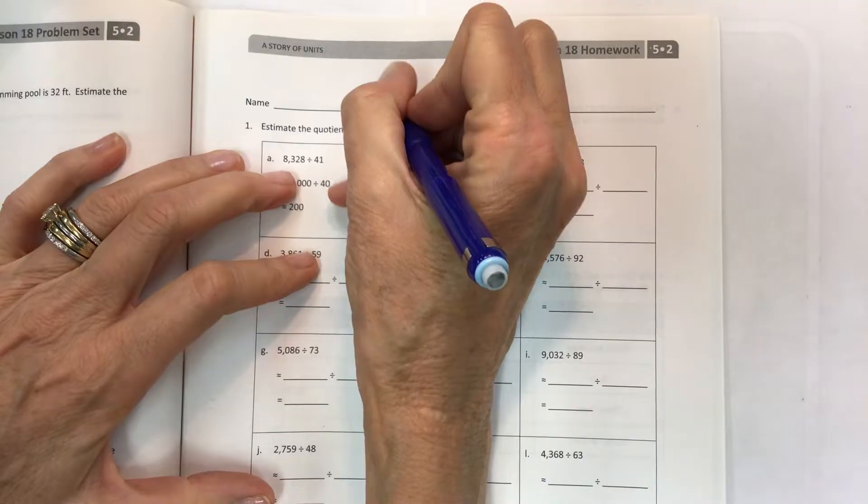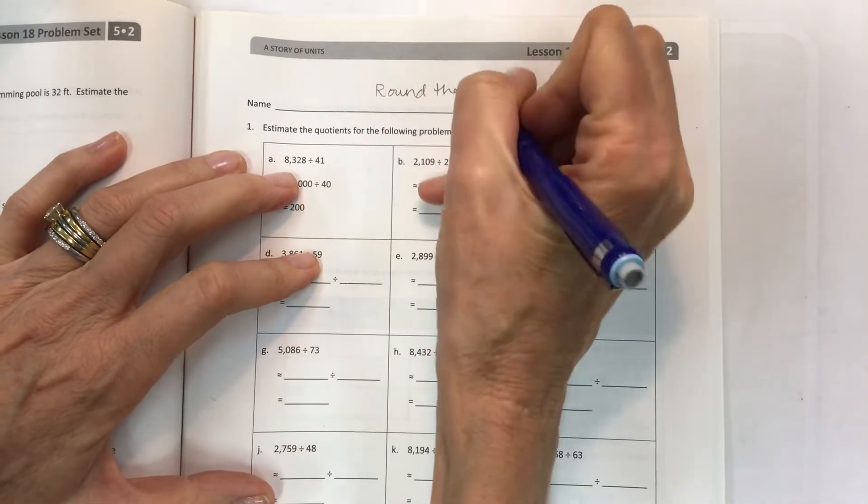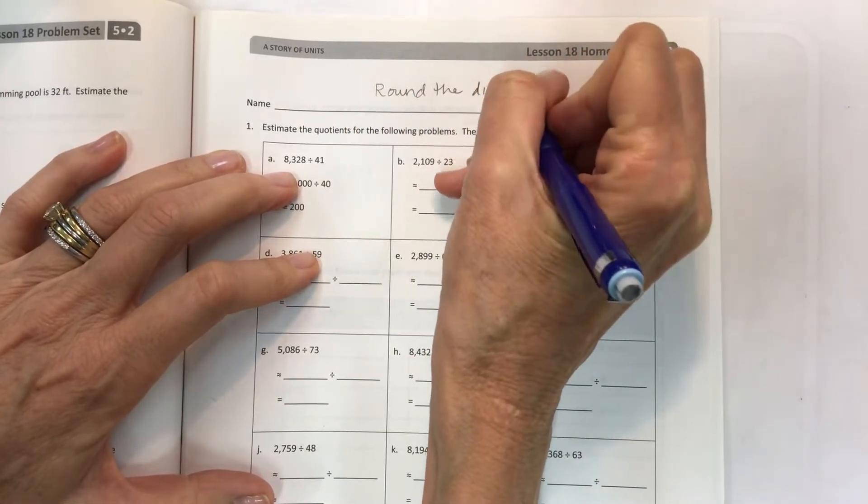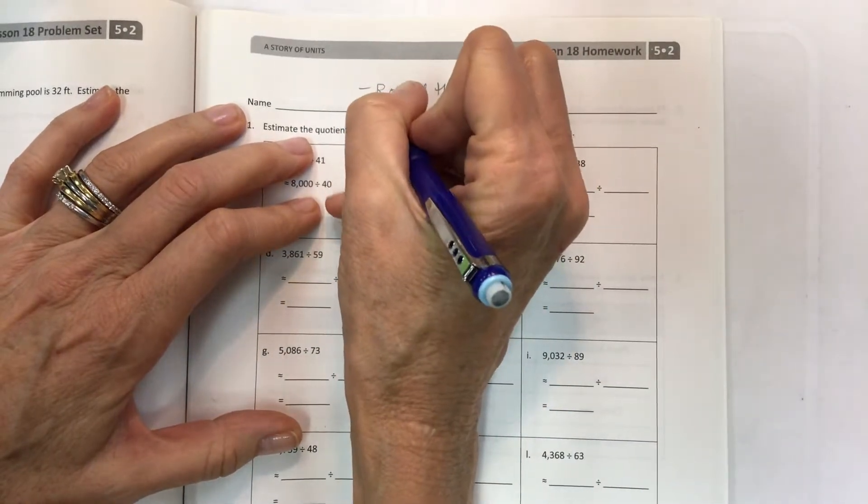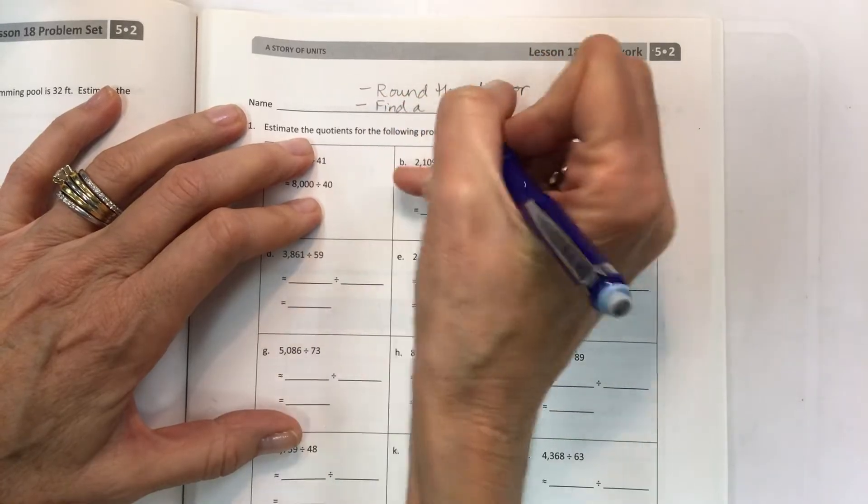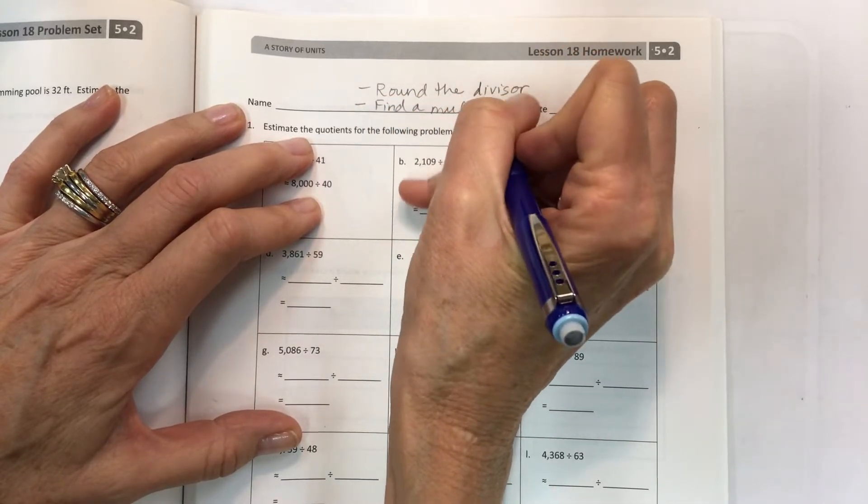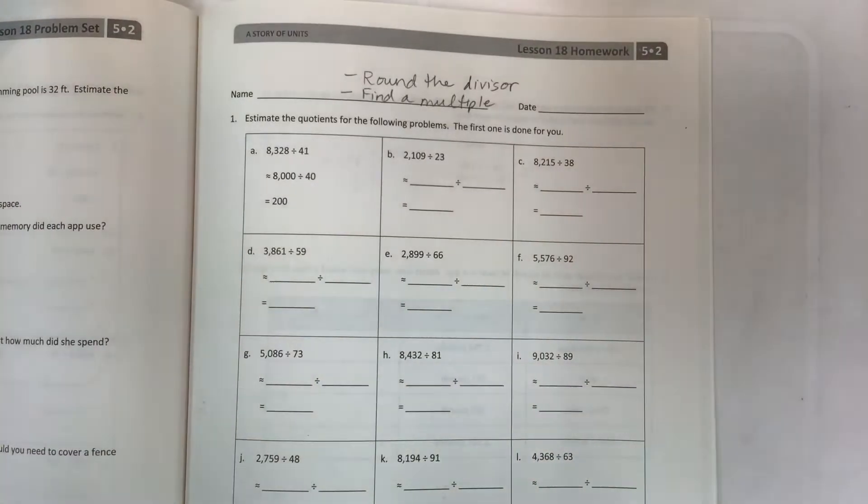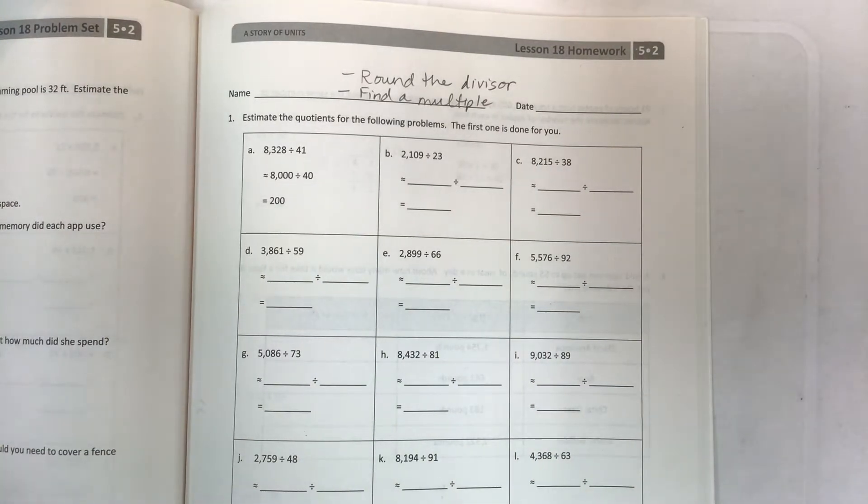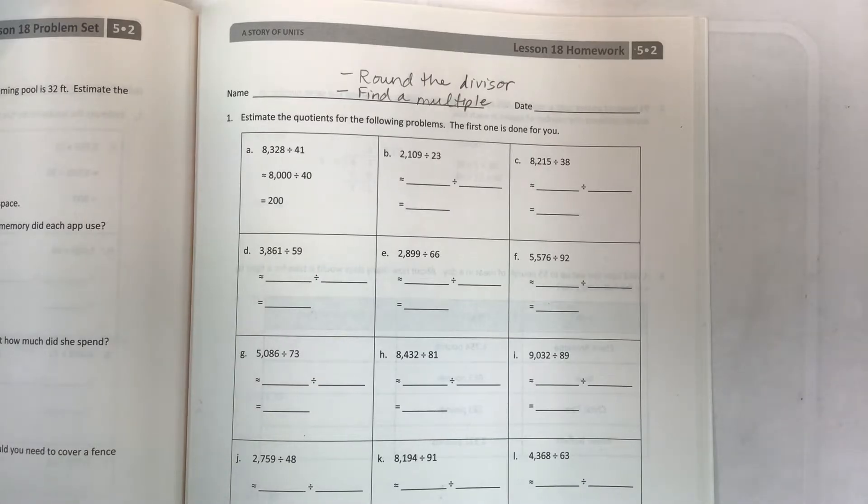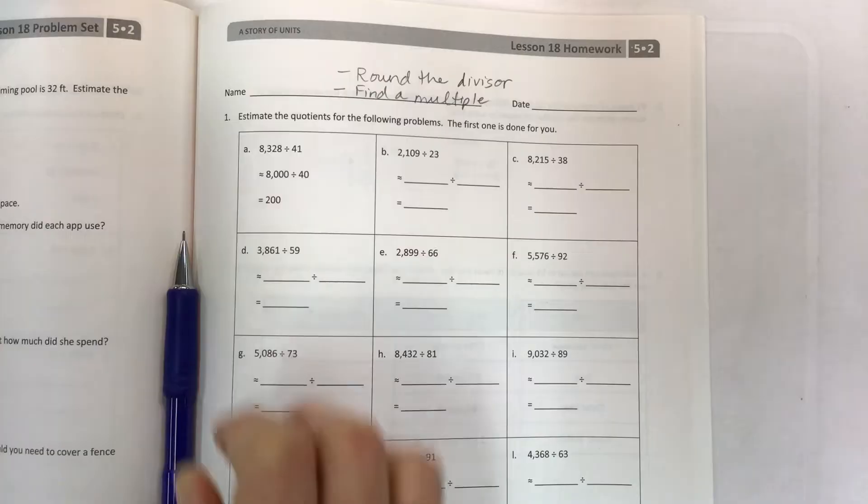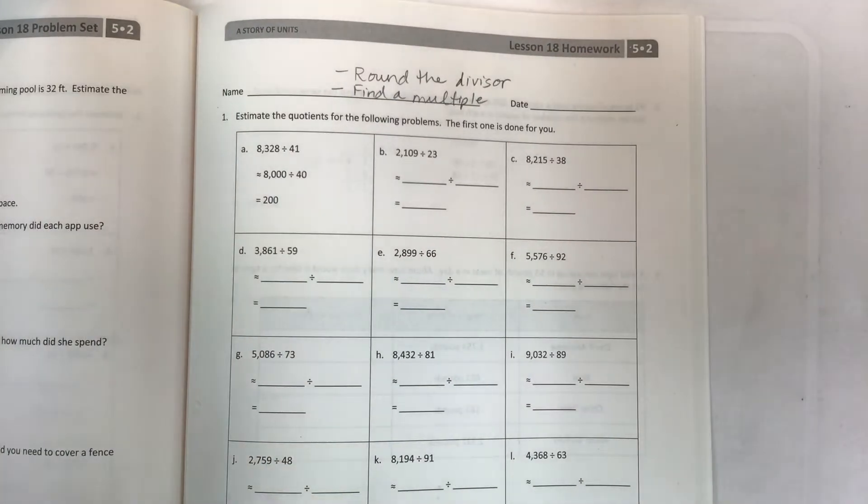Our strategy is to round the divisor first - you can write that up here if you want. After you round the divisor, the second step is to find a multiple of the divisor so that you can then have a super easy rounded estimated problem using compatible numbers. Remember, we're not just following the regular rounding rules - we're using compatible numbers that go together so that this work is easy. We want the easy button - make it easy.